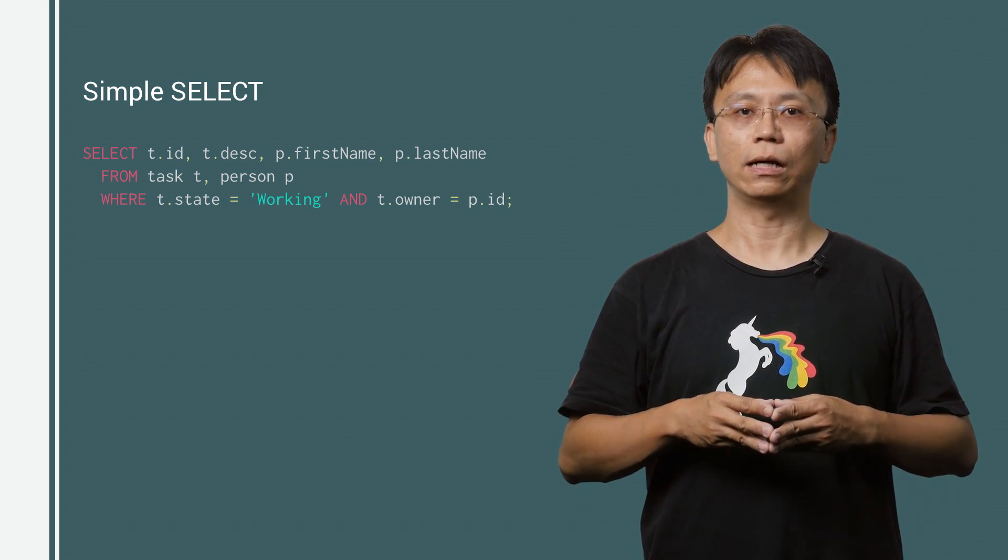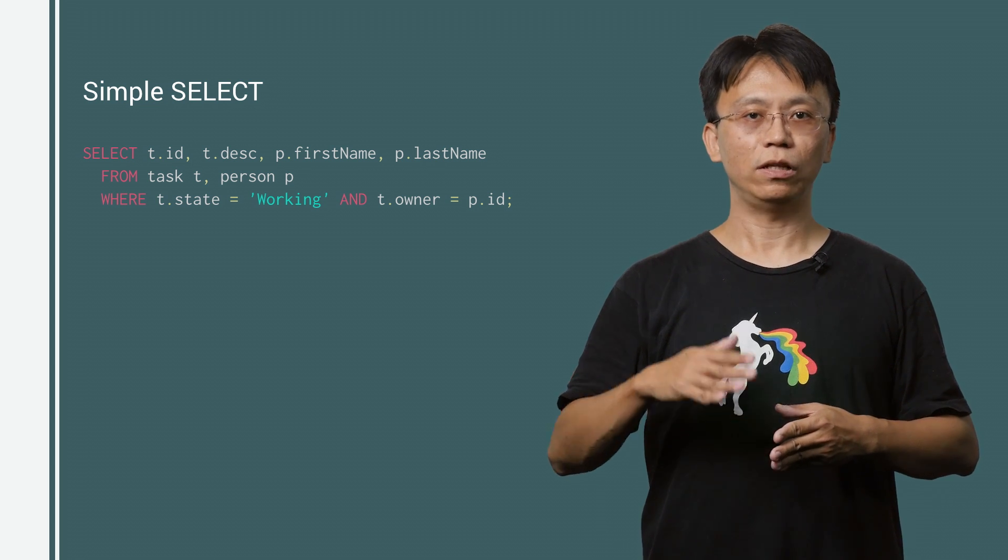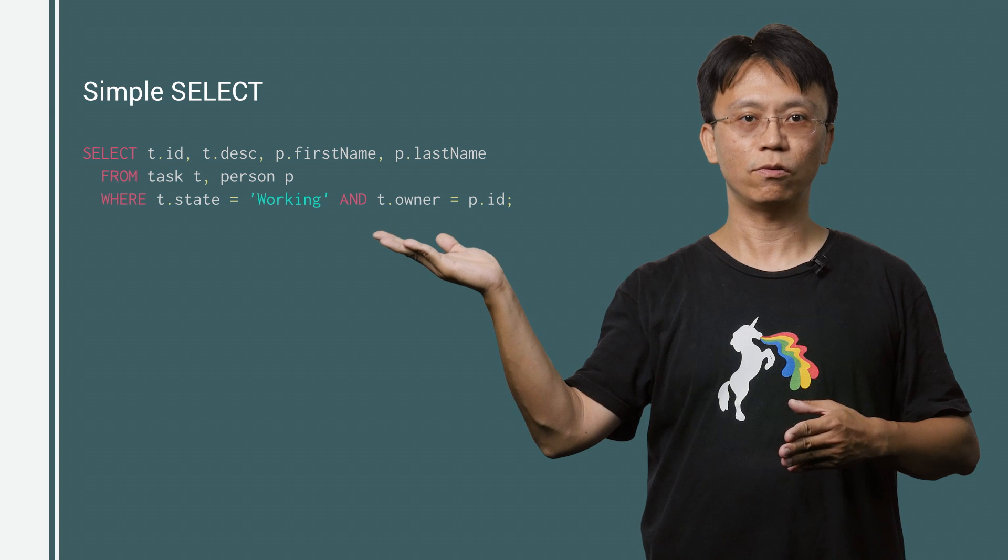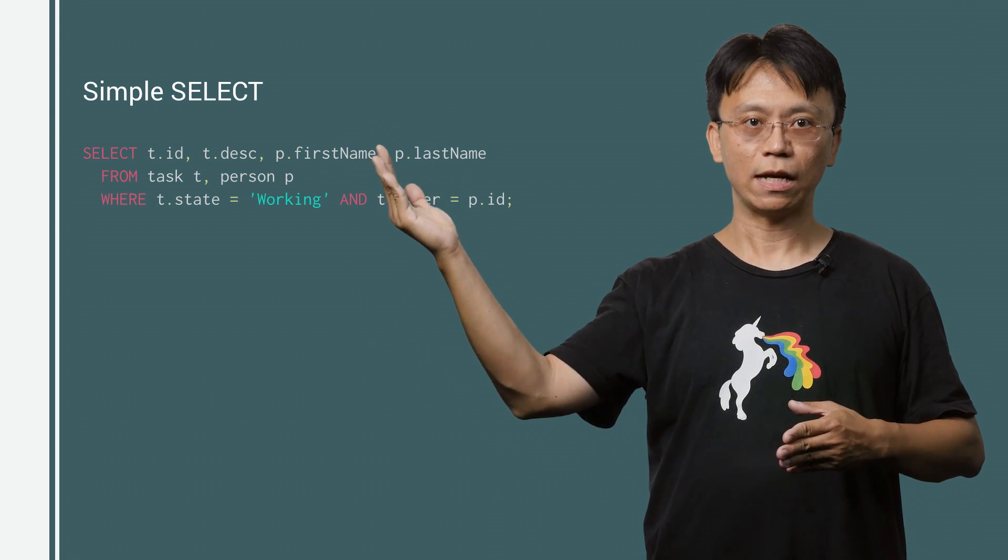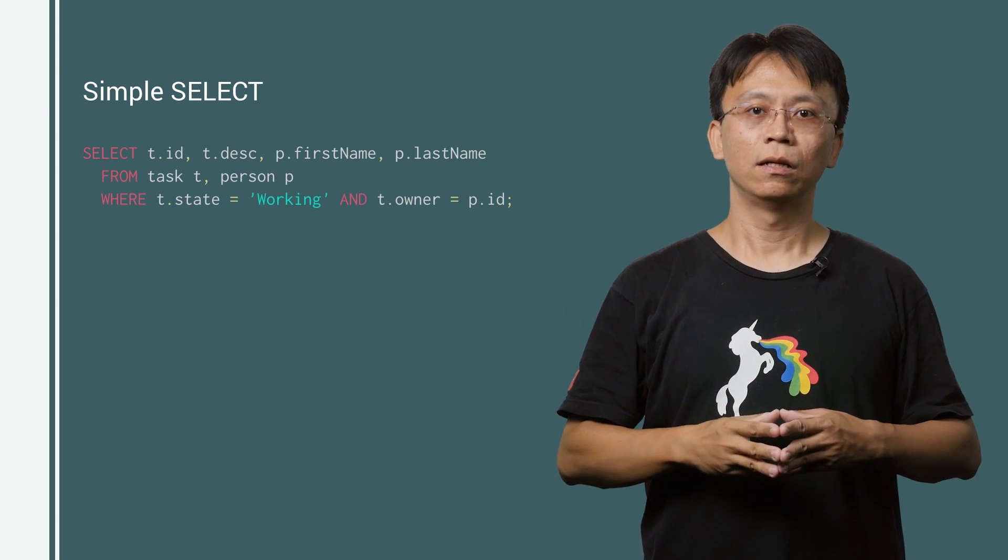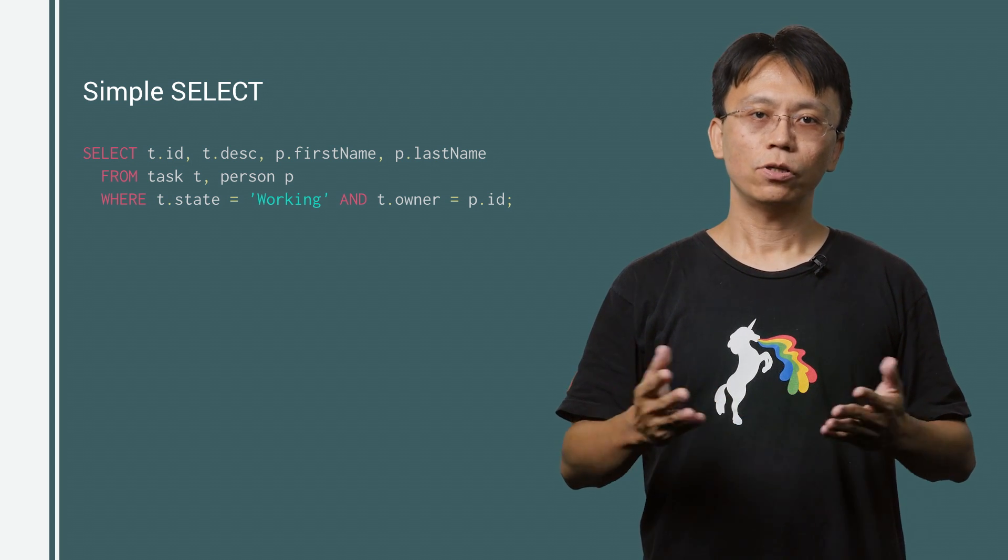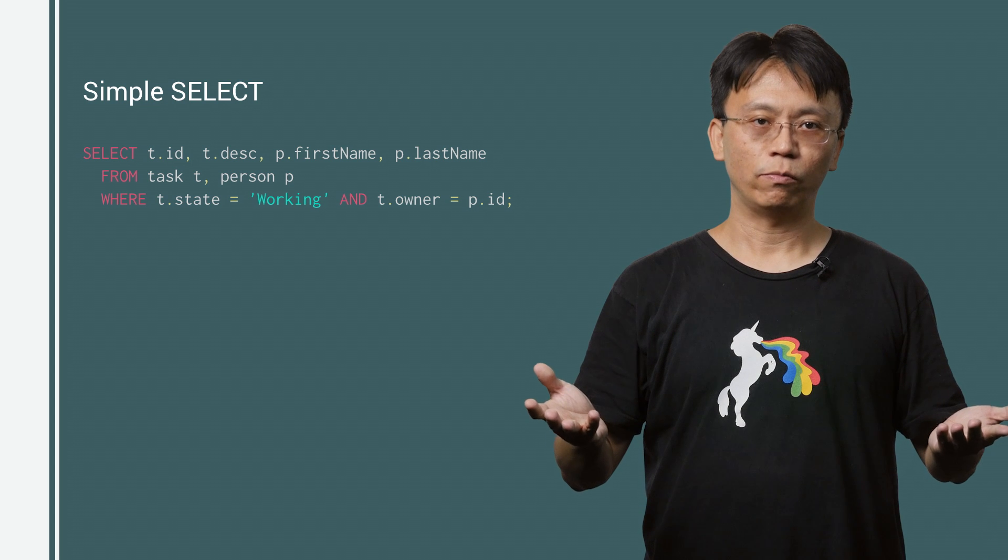In good old days, we list all tasks that are in the works with their owners using this simple SQL statement. Select from task and person where task state equals to working, and task owner equals to person.id.